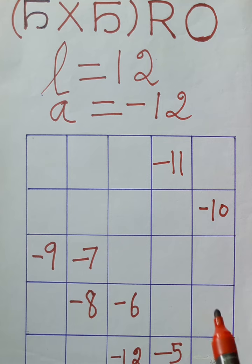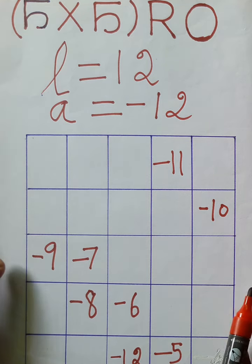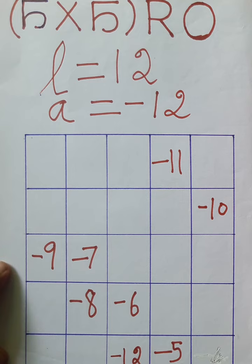a is equal to minus 12. Now we are going to write in this complete this table. I start from here minus 12 in this direction, downward direction.